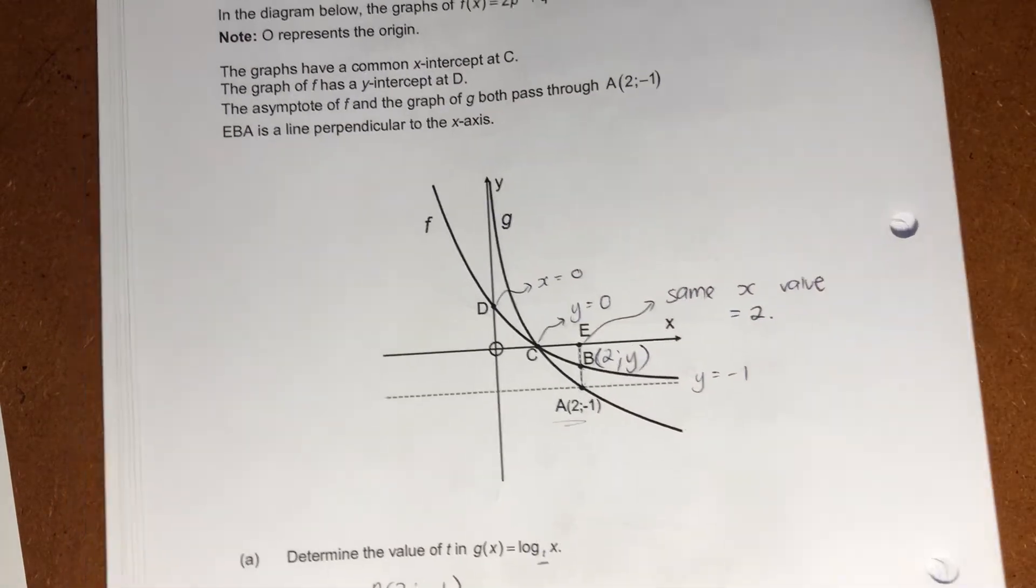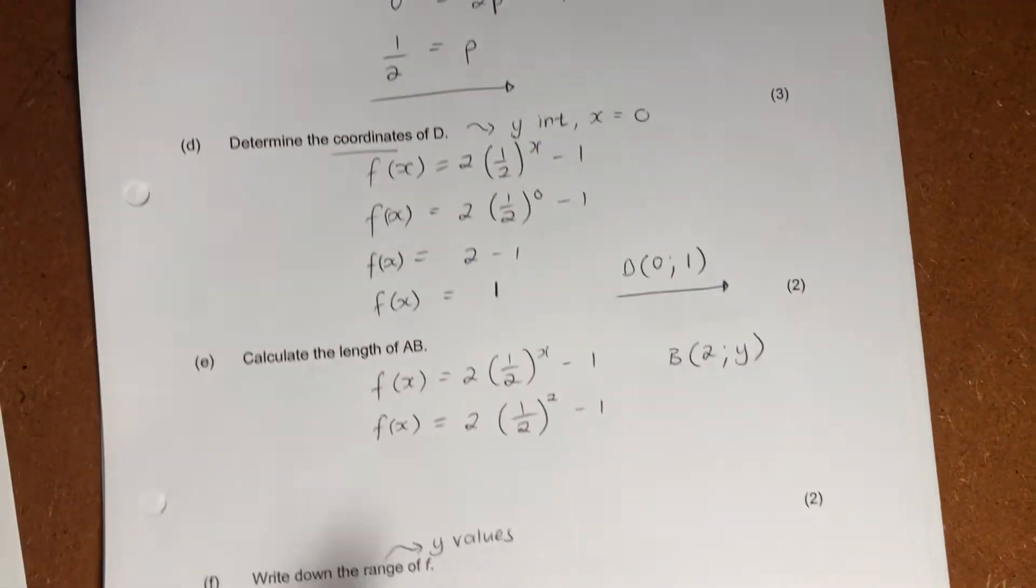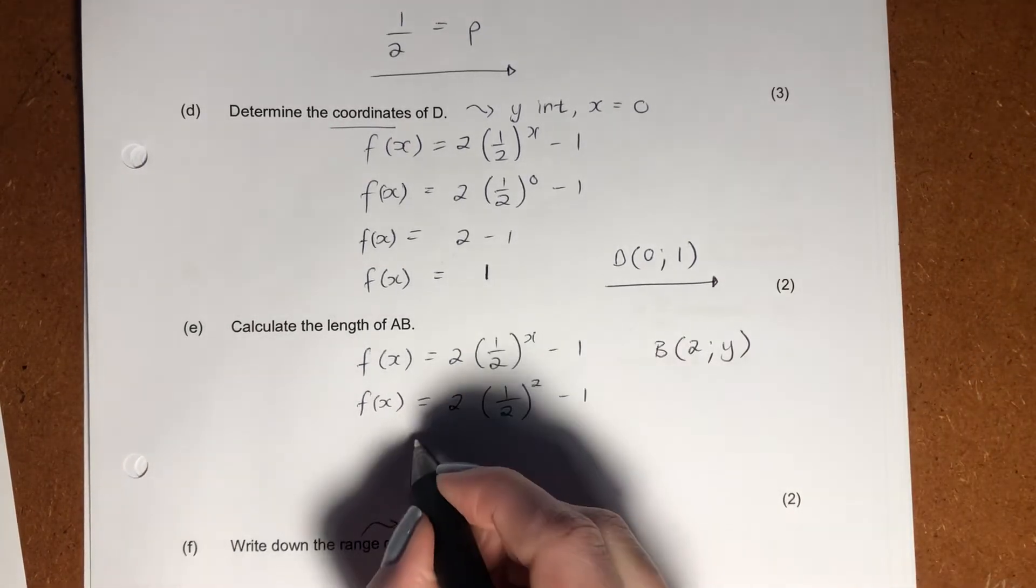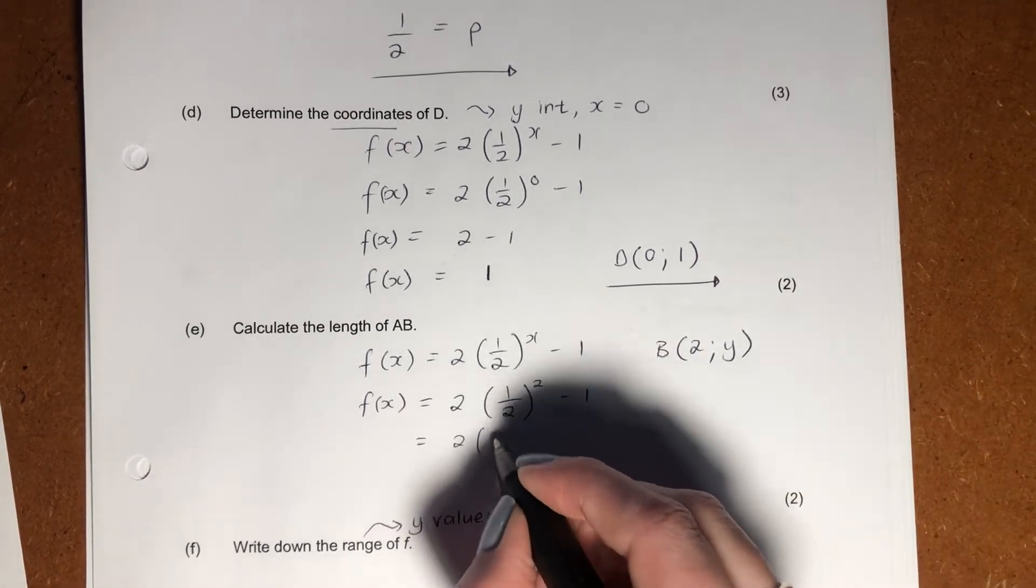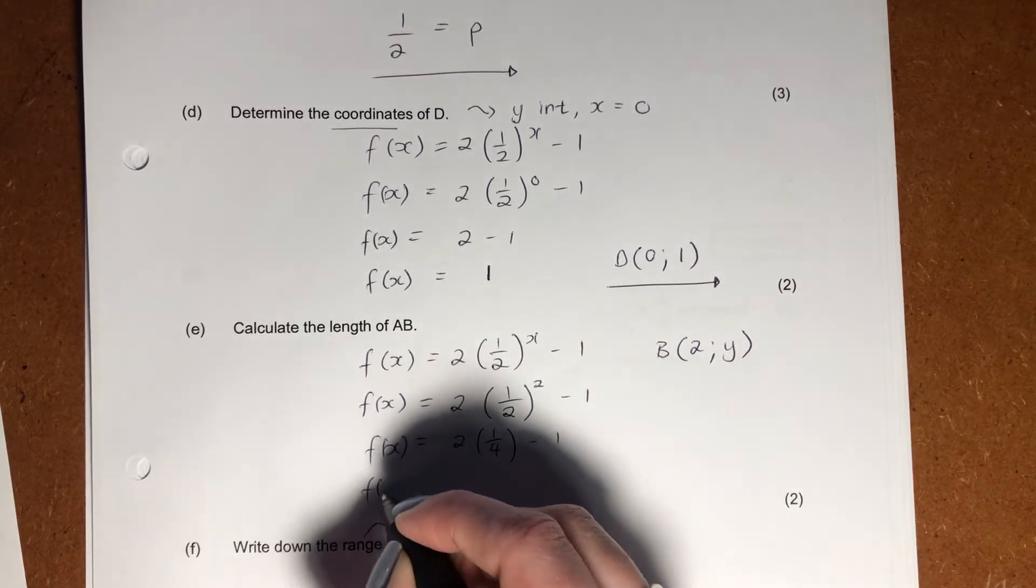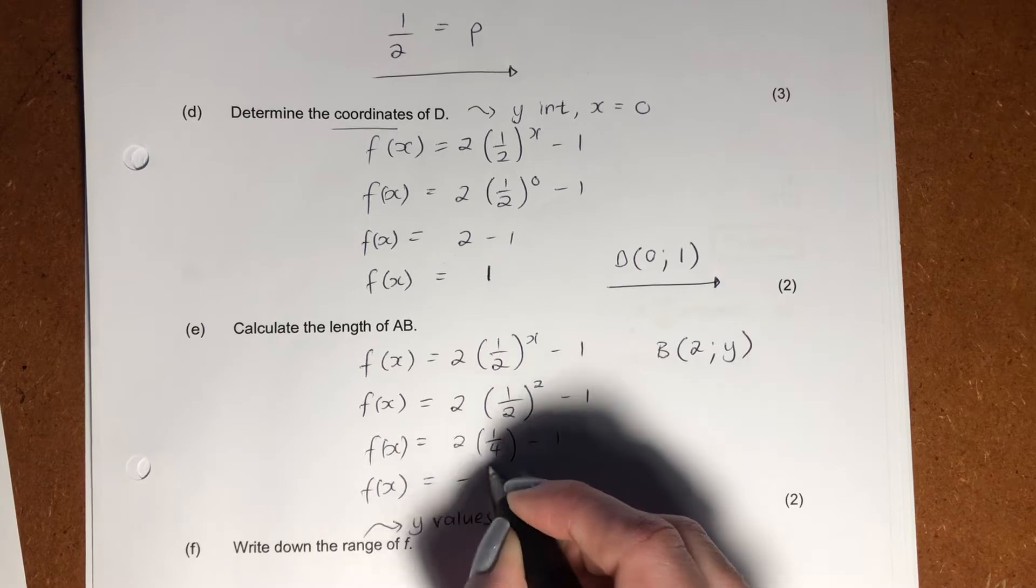So we really have a strategy there. So what I've done, written out F of X, subbed in 2. Here, a little bit of algebra, right? It shouldn't stress you out, right? And you should get that your F of X equals negative 1 half.